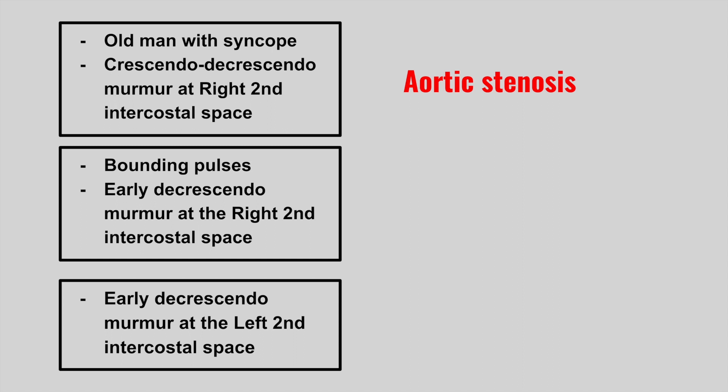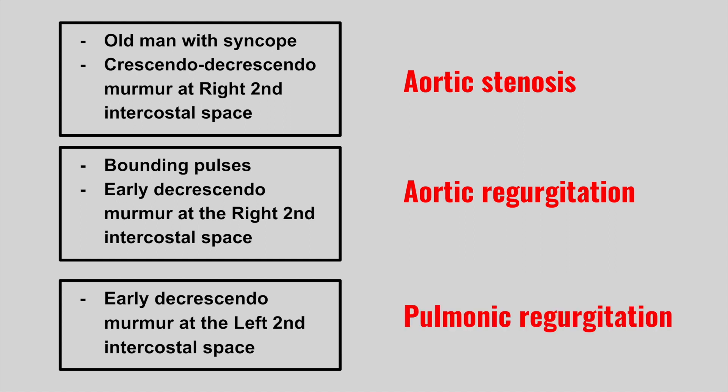The next one is bounding pulses with an early decrescendo murmur at the right second intercostal space — this is aortic regurgitation. The next one is an early decrescendo murmur at the left second intercostal space — this is pulmonic regurgitation. Both pulmonic and aortic murmurs are identical; it is the location that differs.